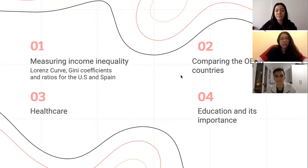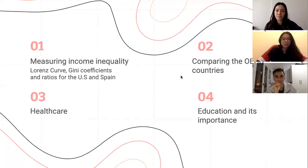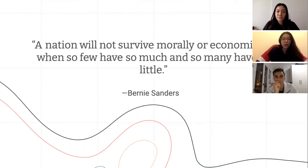We're going to be comparing the OECD countries, then talking about healthcare, and lastly education and its importance. We have a quote here: 'A nation will not survive morally or economically when so few have so much and so many have so little,' which is by Bernie Sanders.